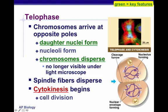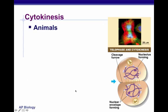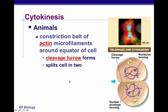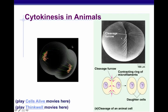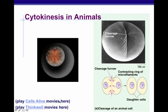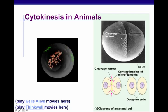Cytokinesis is where we actually call the division — the splitting of the cell. In animals, there's a constriction belt of actin microfilaments around the equator of the cell, forming what is called the cleavage furrow, which splits the cell in two like tightening a drawstring. You can see the cleavage furrow forming, tightening that belt, ending up with two daughter cells.